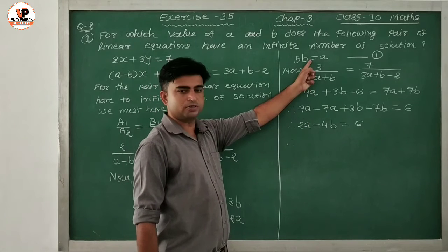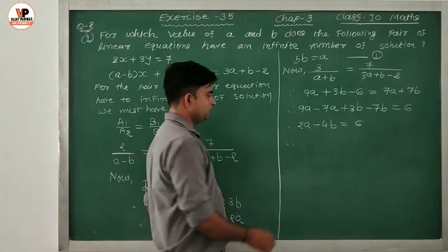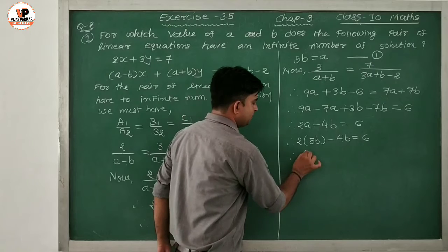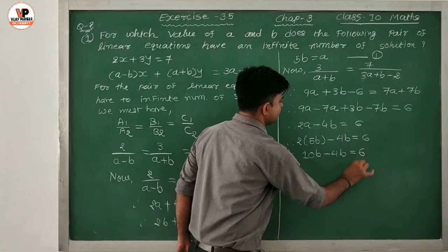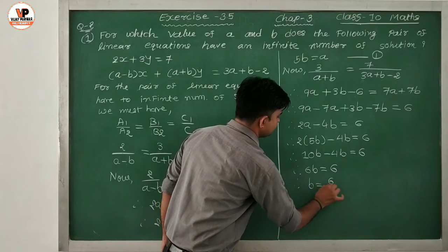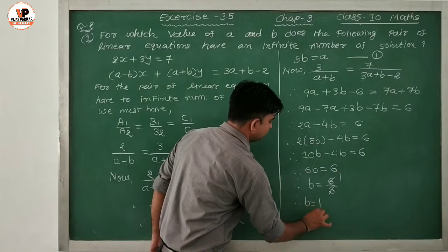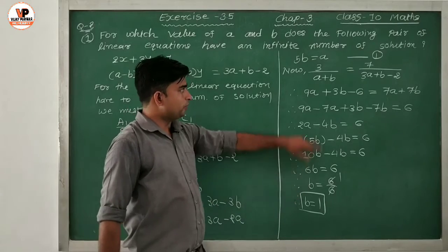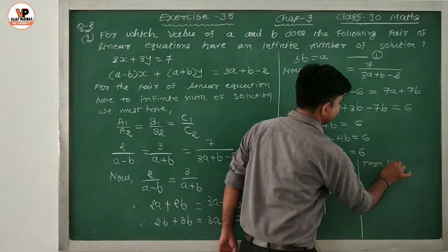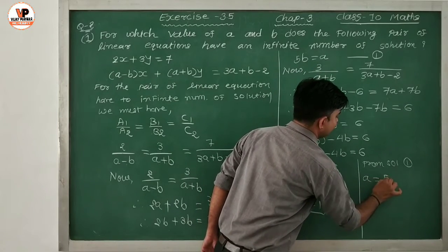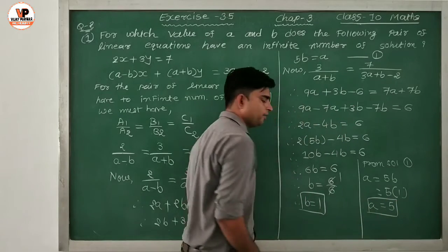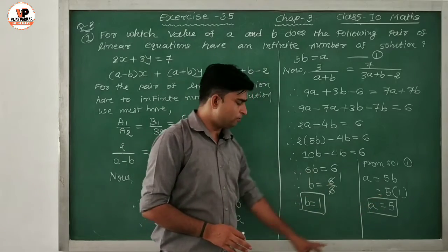Here we take the value of A from Solution 1 — A = 5B — and put it in: 2(5B) - 4B = 6 → 10B - 4B = 6 → 6B = 6 → B = 1. B ki value humhe mil chuki hai: B = 1. Now this value we put in Solution 1: A = 5B = 5 × 1 = 5. Finally we get A = 5 and B = 1.